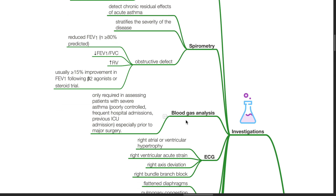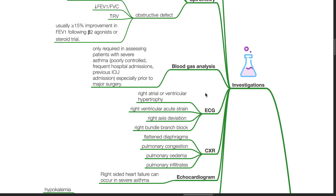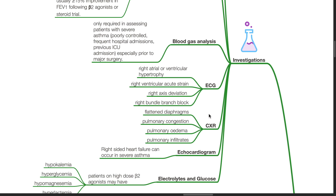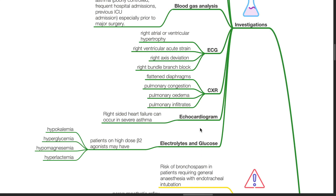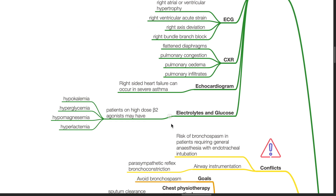Blood gas analysis is only required in assessing patients with severe asthma, poorly controlled with frequent hospital admissions, previous ICU admission, especially prior to major surgery. ECG may show right atrial or ventricular hypertrophy, right ventricular acute strain, right axis deviation and right bundle branch block. Chest X-ray may show flattened diaphragms, pulmonary congestion, pulmonary edema and pulmonary infiltrates. Echocardiogram is indicated to assess right-sided heart failure. Check electrolytes and glucose — patients on high-dose beta-2 agonists may have hypokalemia, hyperglycemia, hypomagnesemia and hyperlactemia.